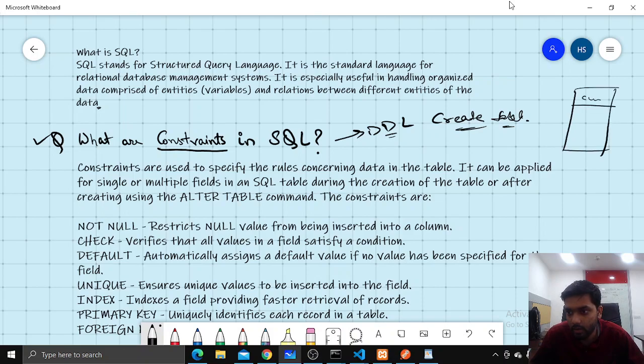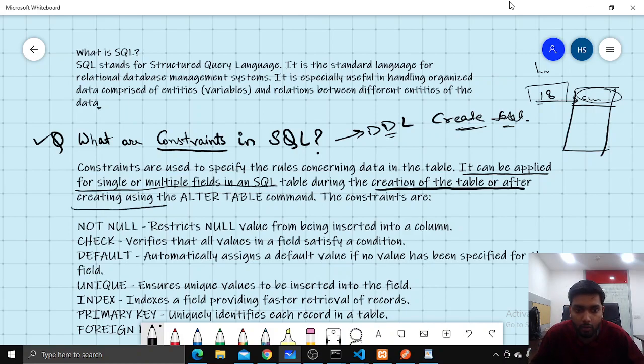Suppose a constraint here checks that age should be greater than 18, suppose a license database where age should be greater than 18. From DOB we will calculate the age, then check that it is greater than 18. This is a constraint. It can be applied for single or multiple fields in SQL table during the creation of table or after creating using the ALTER TABLE command.